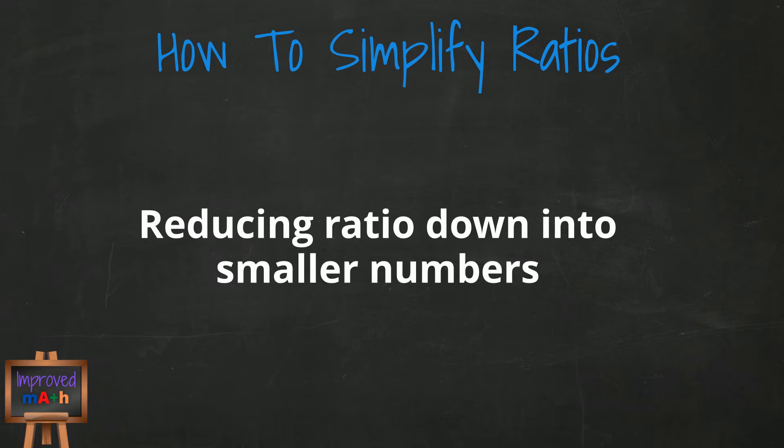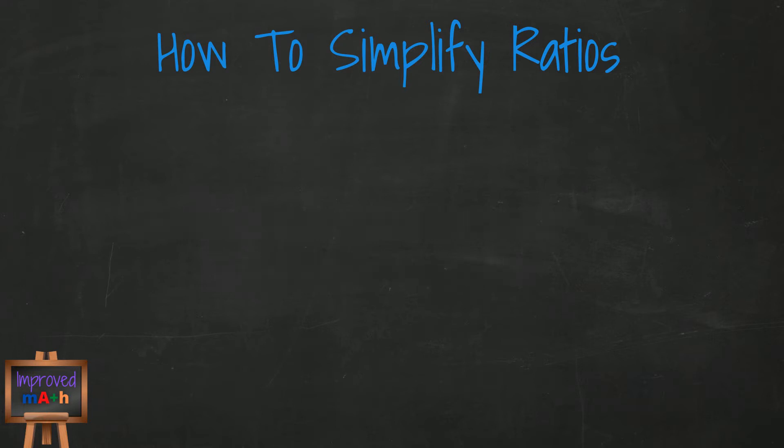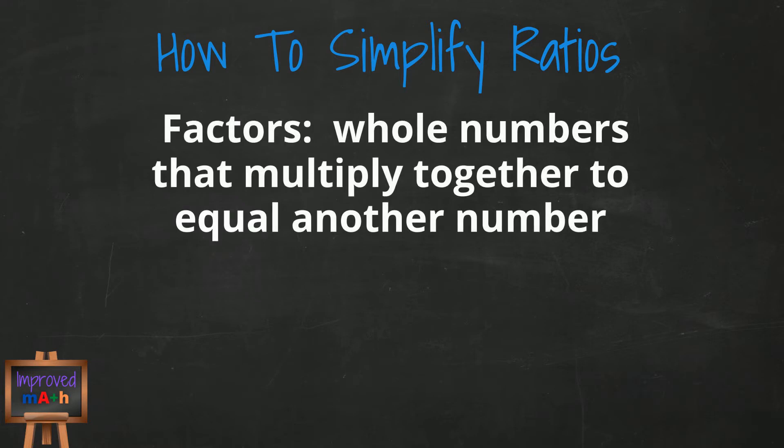Now, before we start, we need to go over one thing that's very important in simplifying ratios, and that is factors. A factor is a number that divides into another number exactly without having any remainder. You can also think about it as this: What numbers multiplied together equal a given number?